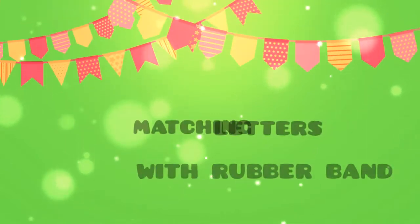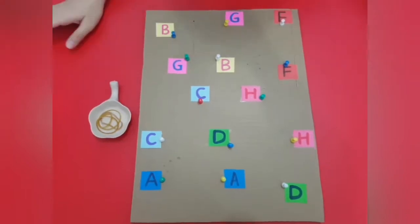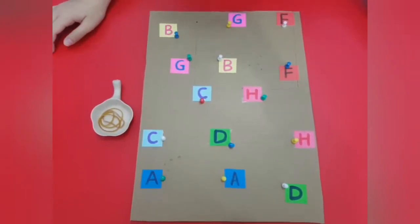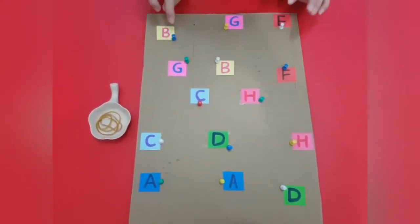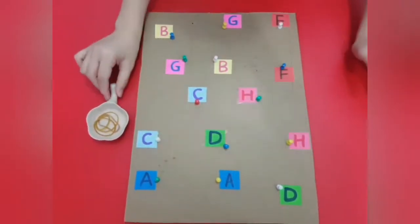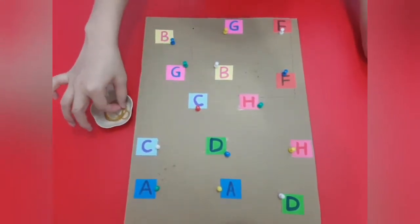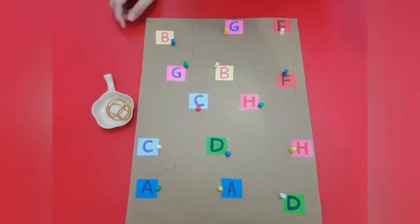Hi students, now we are going to do matching letters with rubber bands. Here Miss has a board of letters: B, F, D, H, C, and some rubber bands. Now Miss will show you how to do it first.